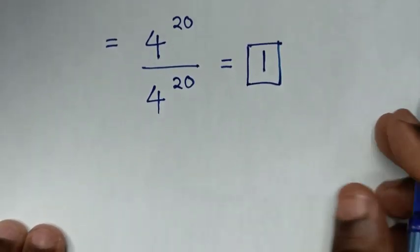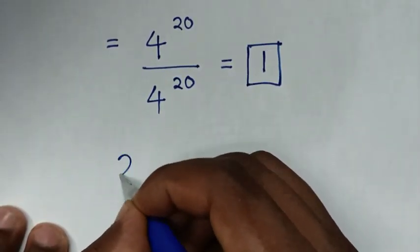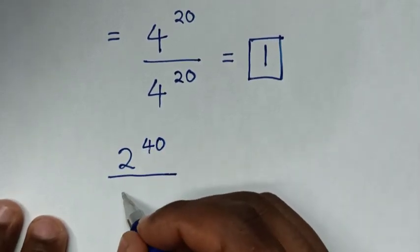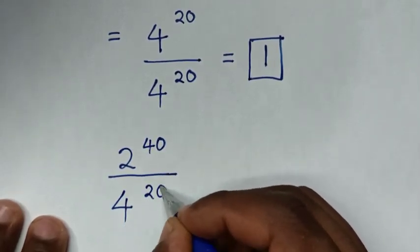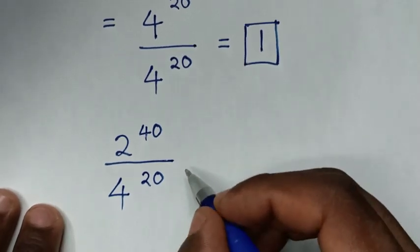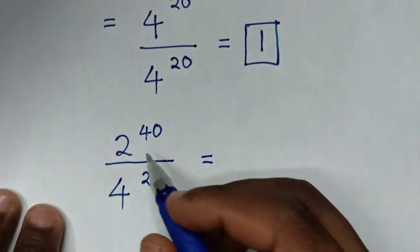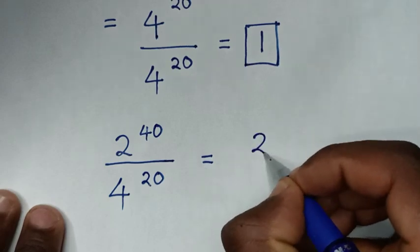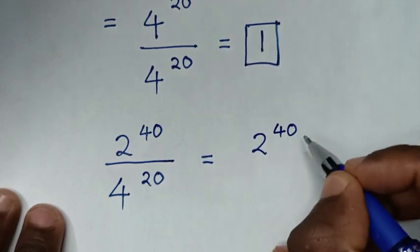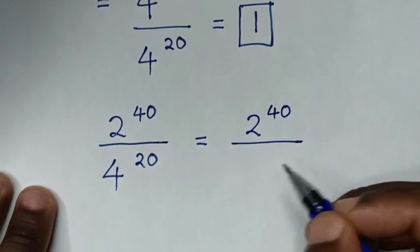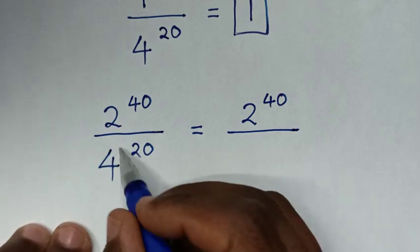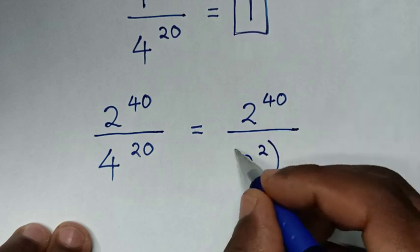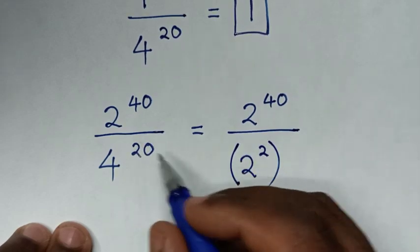To solve in another method from our problem, which is 2 power of 40 over 4 power of 20. So it will be equal to: we write the same numerator exponent in the numerator, which is 2 power of 40, then over, in the denominator 4 power of 20, where 4 is the same as 2 power of 2, then bracket power of 20.